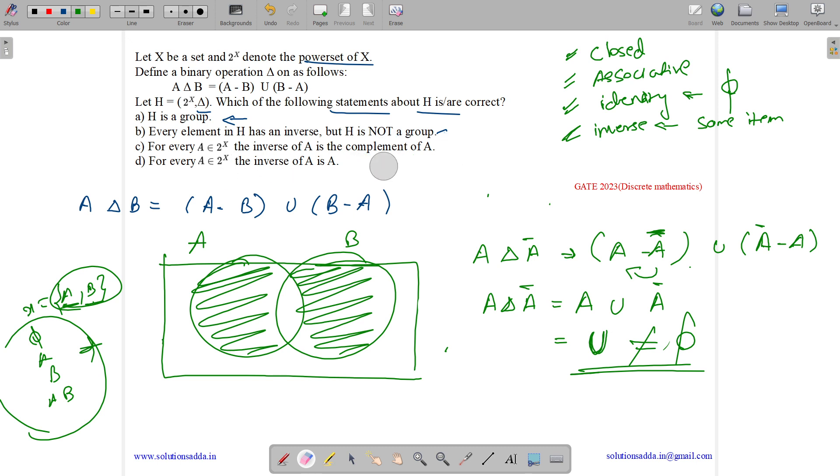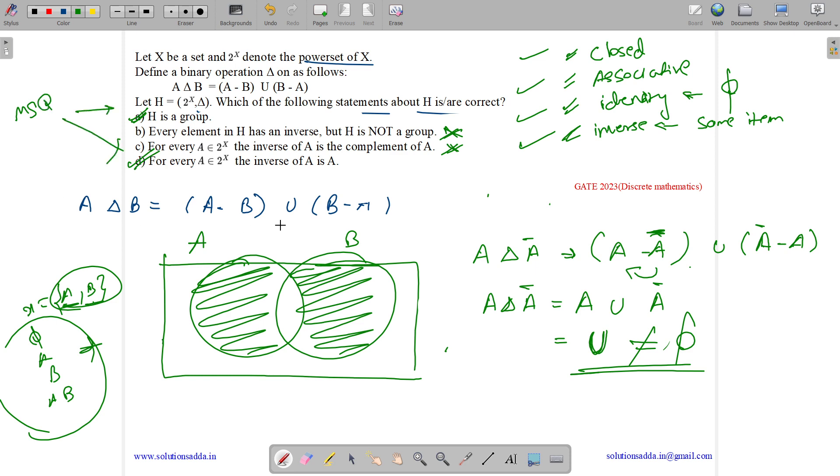So what all options are correct? As it satisfies closure, associativity, existence of identity and existence of inverse, so H is a group for sure. Every element in H has an inverse but H is not a group? False, as H is a group. For every A belongs to 2 to the power X, the inverse of A is complement of A? No. The inverse of A is A? Yes. So it was an MSQ question and the answers are options A and D.